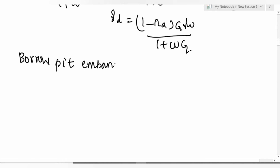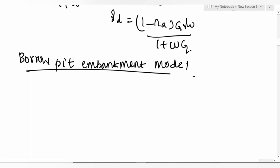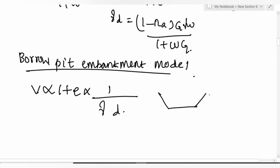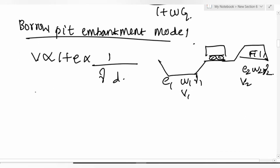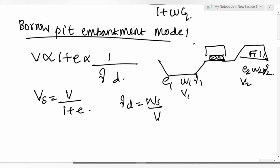In the boropit-embankment model, soil is taken from a borrow pit and filled into an embankment. Void ratio, water content, unit weight, and volume differ at each location: e1, w1, gamma1, V1 in the pit and e2, w2, gamma2, V2 in the fill. Remember: V_s = V / (1 + e) and gamma_d = W_s / V.